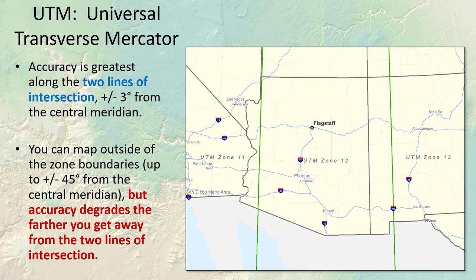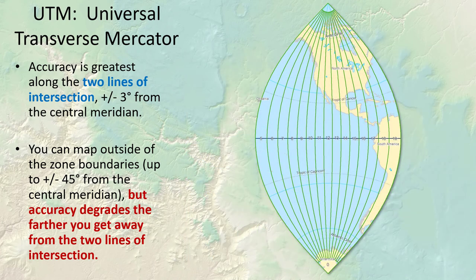You can map outside of the zone boundaries — in fact, you can go up to plus or minus 45 degrees from the central meridian of the zone. But accuracy does degrade the farther you get from those lines of intersection. If we map the world in UTM zone coordinates, we can cover all of North America and half of South America, but you can easily see projection distortion as you get farther and farther from the zone. It's no problem to use a zone for data just outside the zone, but you really don't want to get more than six degrees or so away from the zone.